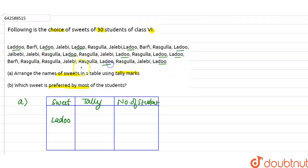So we can say number of students who like Laddu is 11. In tally marks will write 11 as one, two, three, four, five, six, seven, eight, nine, ten, and eleven. Now next sweet is Burfi.